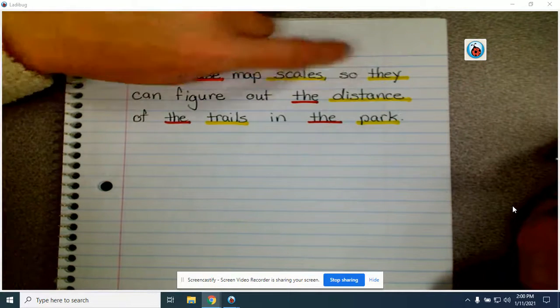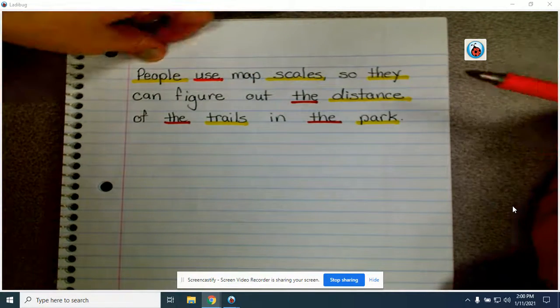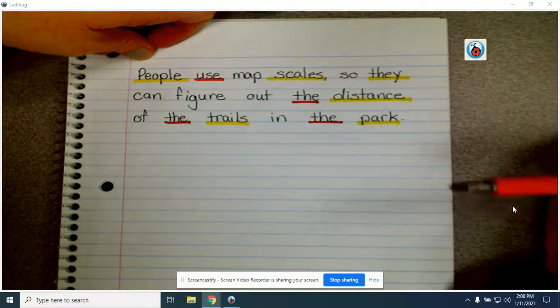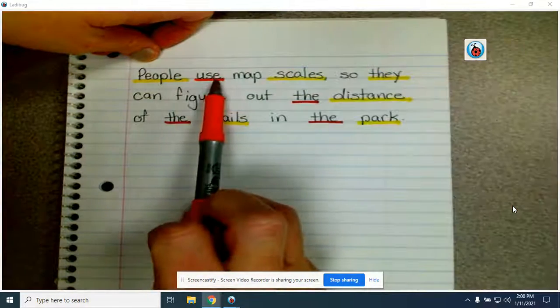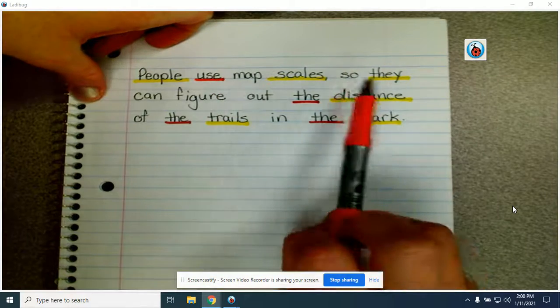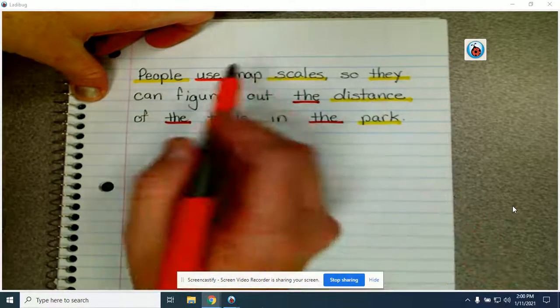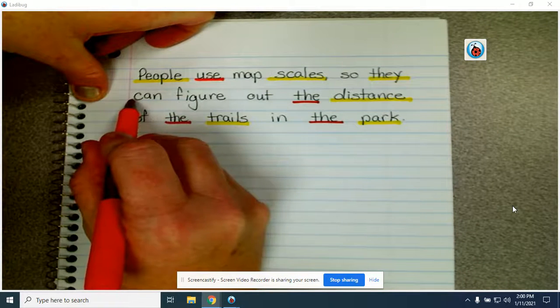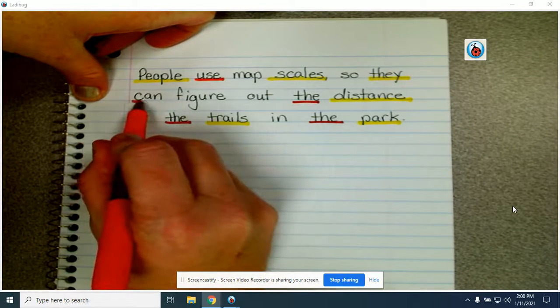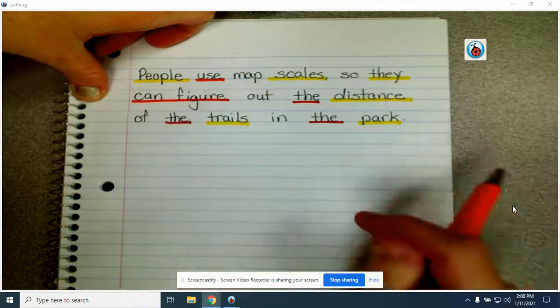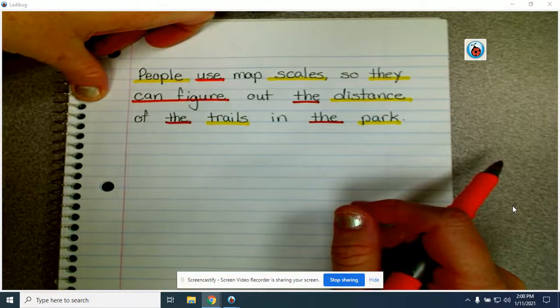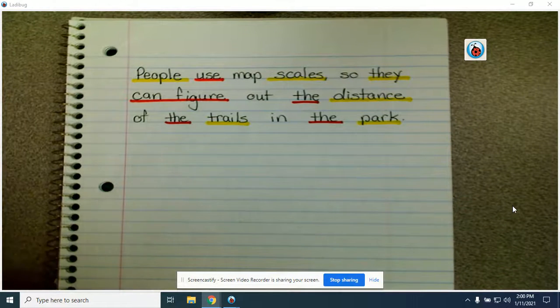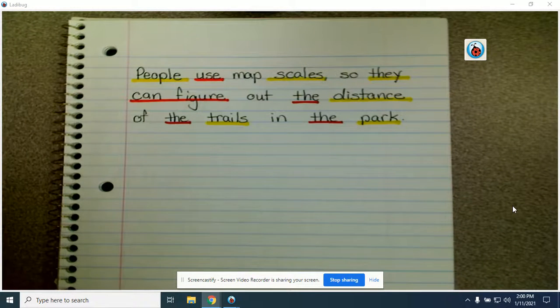We just very briefly talked about compound sentences last week. It's where we take two sentences and put them together. So we have use as a verb here, and then we also have can figure out, or can figure. So we could do can figure as our verb as well. So that's a little tricky, and we'll get more practice on those, but that's something completely new for us.